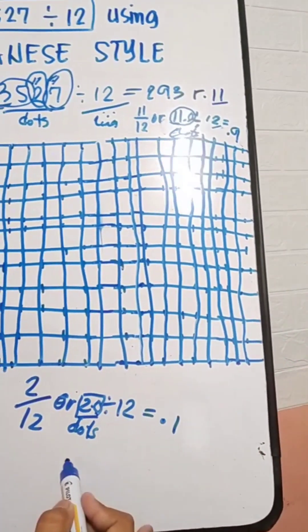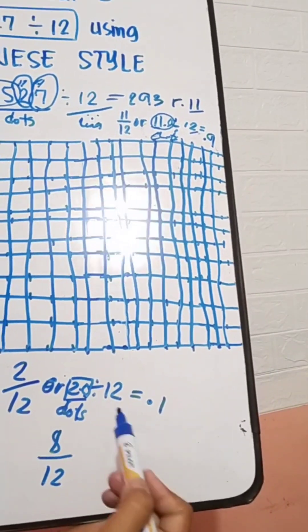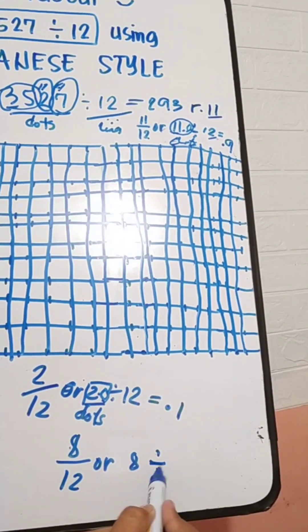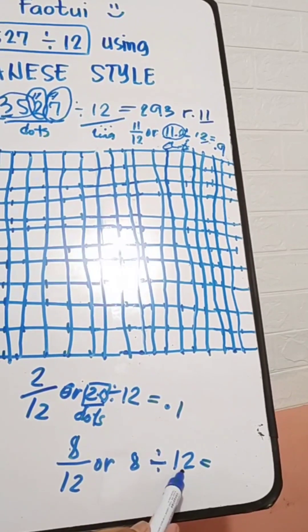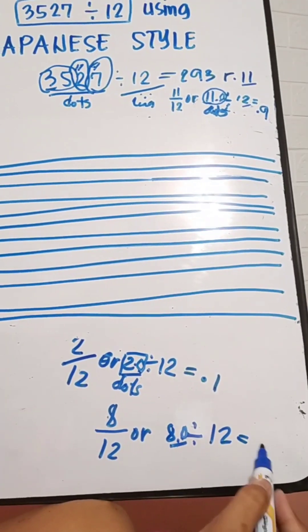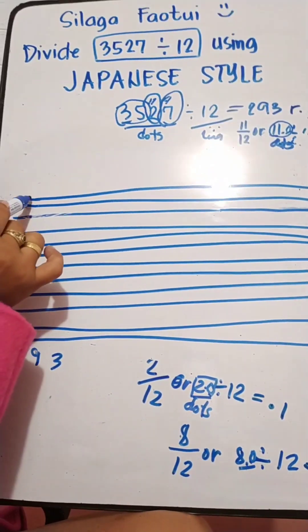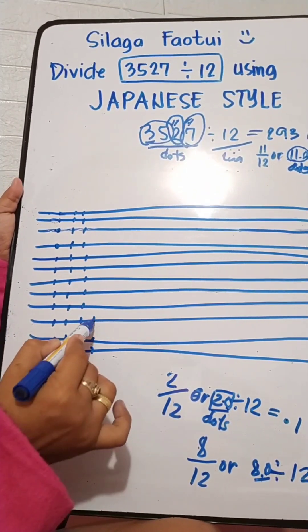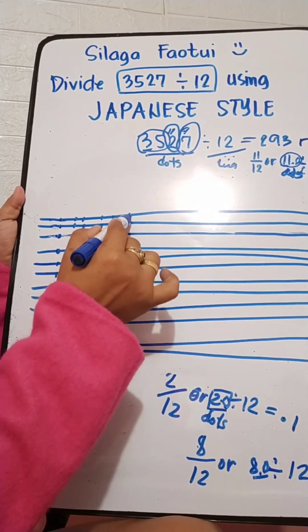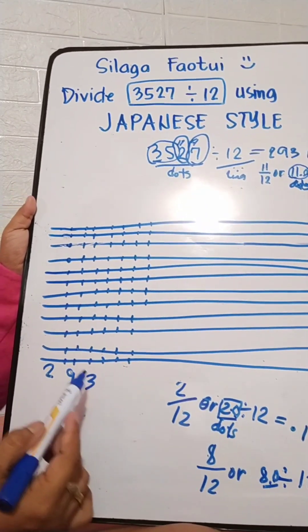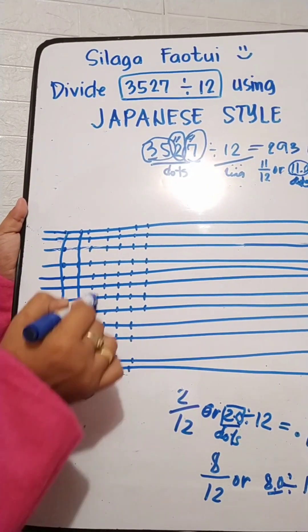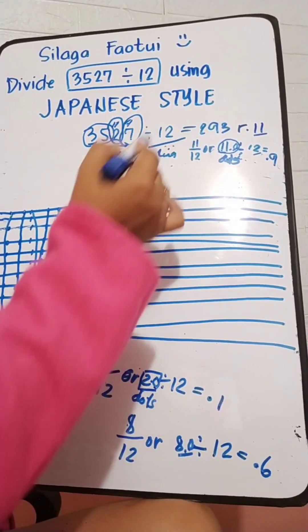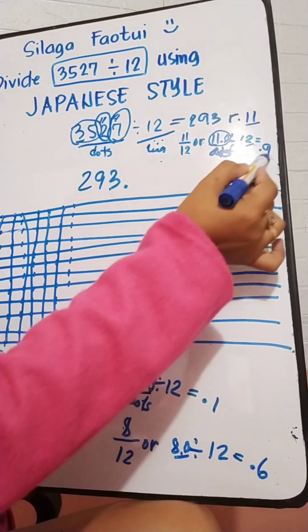So we still have a remainder of 8. Eight over 12, or 8 divided by 12 couldn't be divided to 12 people, so put another zero. Let's count 80 dots. Let's connect 1, 2, 3, 4, 5, and 6. We have point 6. And we will just add 293.916.